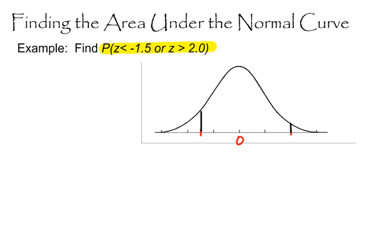And I'm going to shade this graph appropriately. Well, I want to know what's the probability that z is less than negative 1.5. Well, less than would be this direction. And I also want to know what is the probability that z is greater than 2. Well, that would be this direction. So I actually have two shaded regions.